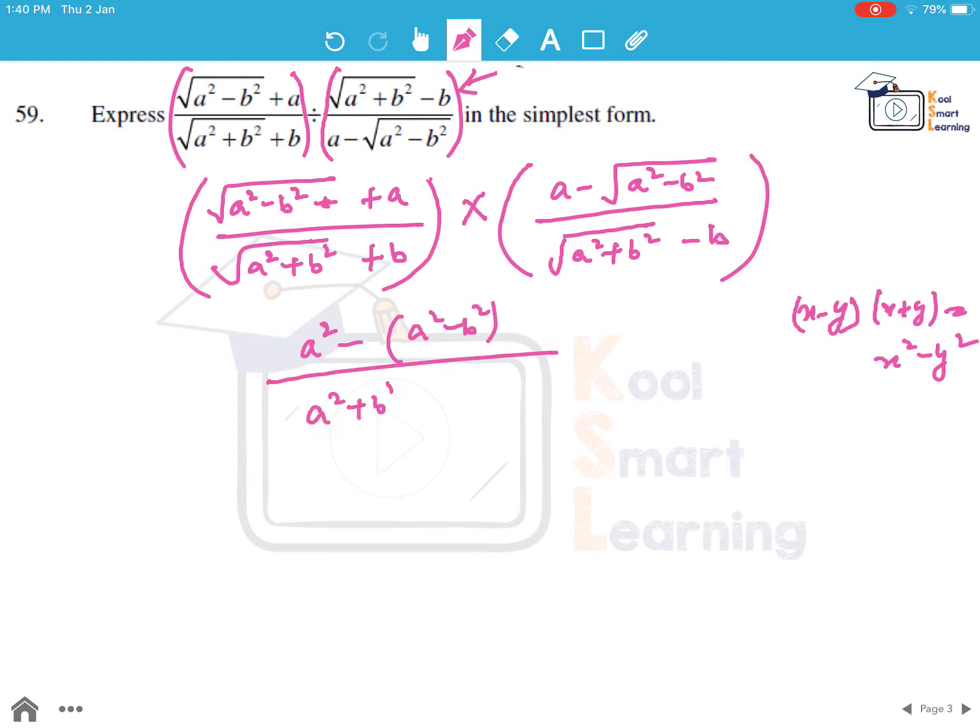In the denominator, it becomes A squared plus B squared minus B squared. So this is nothing but B squared and this is nothing but A squared. So the value of this expression in the simplest form is B squared by A squared.